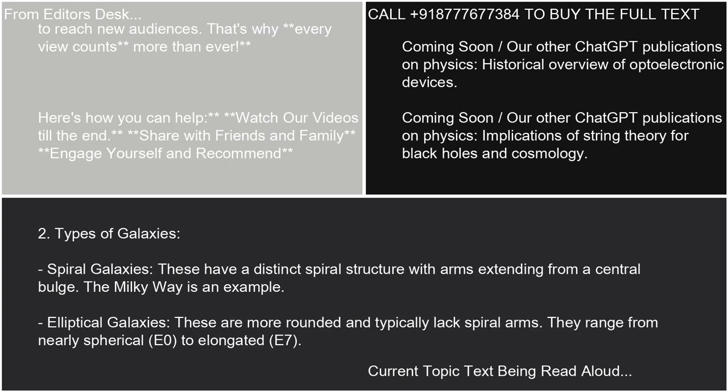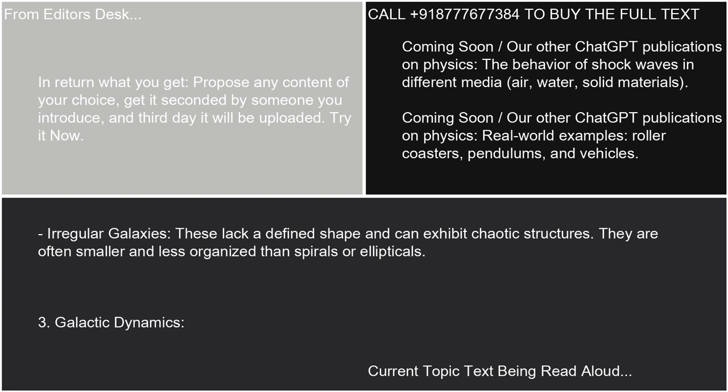2. Types of galaxies. Spiral galaxies have a distinct spiral structure with arms extending from a central bulge — the Milky Way is an example. Elliptical galaxies are more rounded and typically lack spiral arms, ranging from nearly spherical (E0) to elongated (E7). Irregular galaxies lack a defined shape and can exhibit chaotic structures; they are often smaller and less organized than spirals or ellipticals.